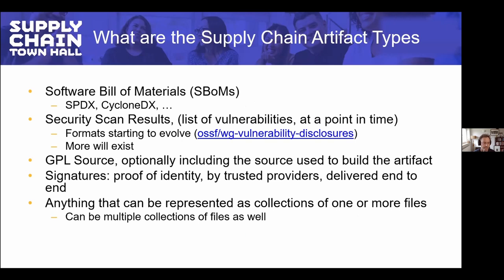We've got a couple of reference types here — security scan results, Helm charts, source code — all can be attached to an image. The whole premise is that you shouldn't have to go to some other place to get the content that you need. Supply chain secure reference types should be wherever that image is. We want everyone to be able to easily attach any of these additional forms of metadata — signatures and SBOMs are the ones we've seen the most demand for — to any kind of content moving around between registries, so you can always have the pieces you need to verify and validate them.